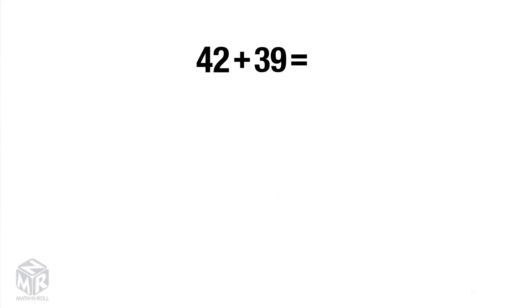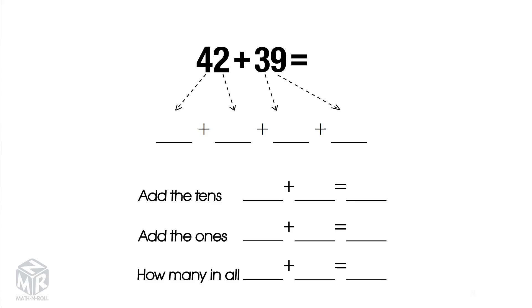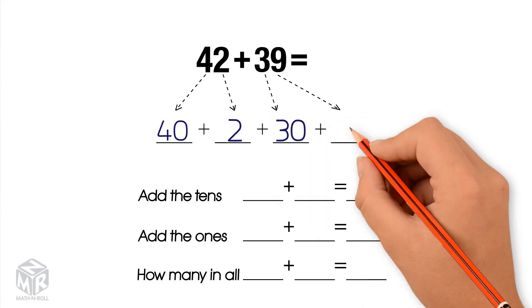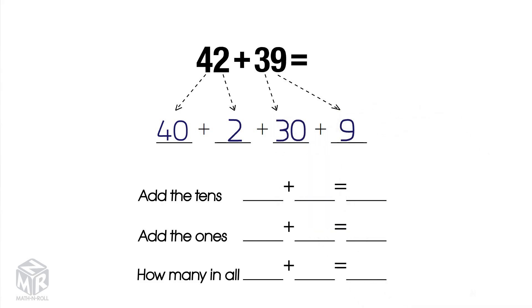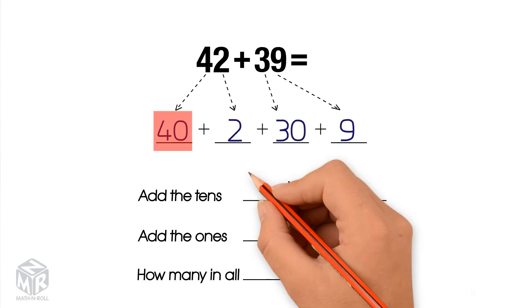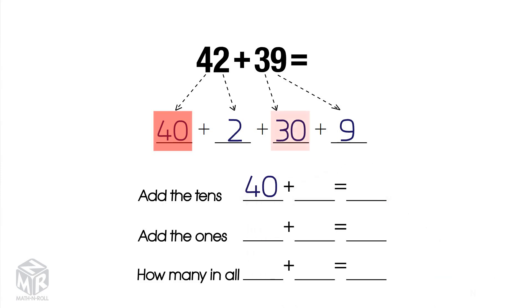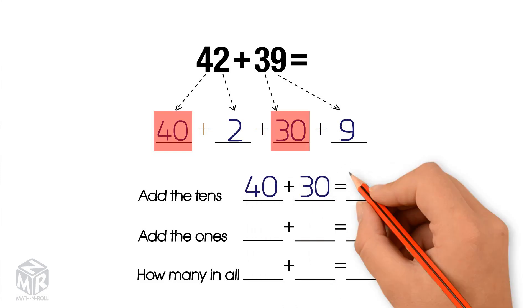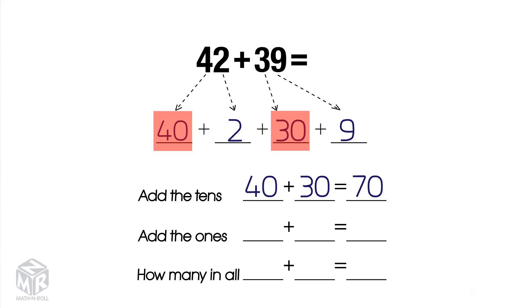Let's try another example: 42 plus 39. 42 breaks apart into 40 and 2. 39 breaks apart into 30 and 9. Now we add the tens: 40 plus 30 equals 70. Next, we add the ones: 2 plus 9 equals 11.